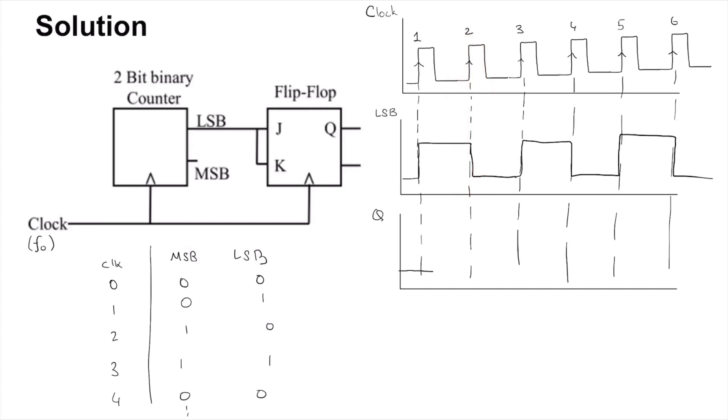But at this clock edge, when the clock has a positive edge, the value is 1, so that means Q will have a flip. Again the value just before the clock edge is 0.